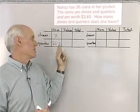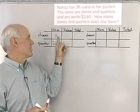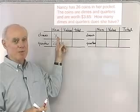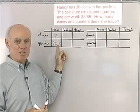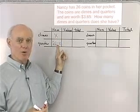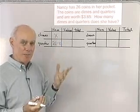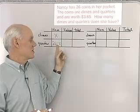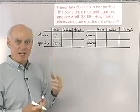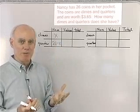For instance, if we find out that she has 10 dimes, then she's going to have 26 minus 10, or 16 quarters. X plus 26 minus X adds up to 26 — the total number of coins.